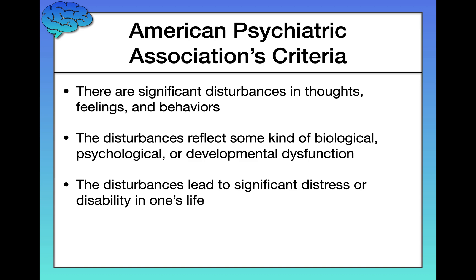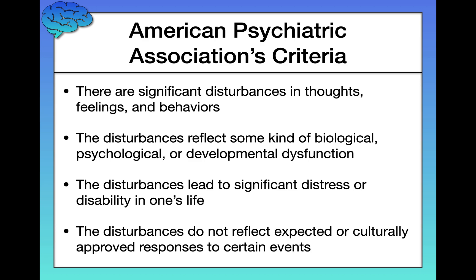Number three: the disturbances lead to significant distress or disability in one's life. Disability here means the disturbance is getting in the way of the person's ability to function normally. For example, if a person has social anxiety so severe they can't go into work or feel too nervous to go to class, that's getting in the way of their ability to function. Number four: the disturbances do not reflect expected or culturally approved responses to certain events. For example, experiencing great sadness after losing a loved one is culturally expected and would not be considered a symptom of a psychological disorder.